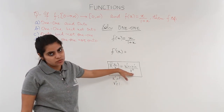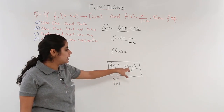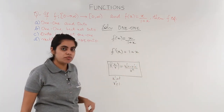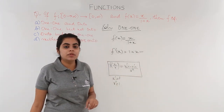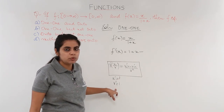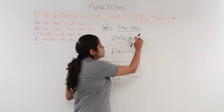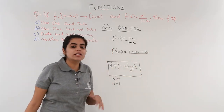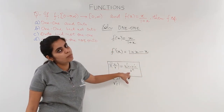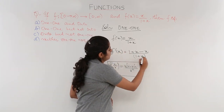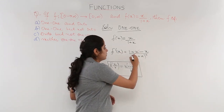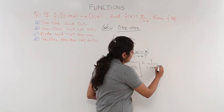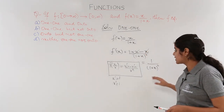Now we put the values into the formula. u' times v gives 1 times (1 plus x), minus v' times u gives 1 times x, all upon v squared which is (1 plus x) whole squared. Cancelling the minus x and x terms, we get 1 upon (1 plus x) whole squared as our derivative.